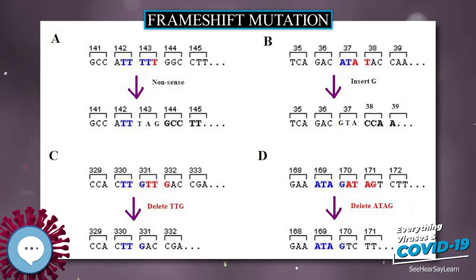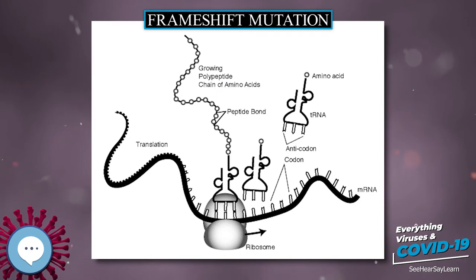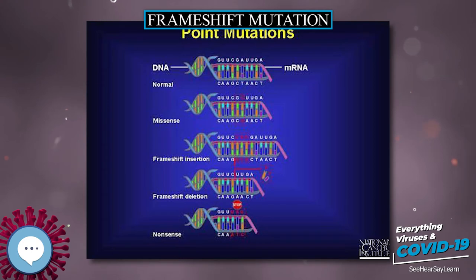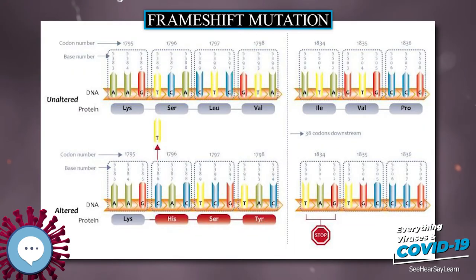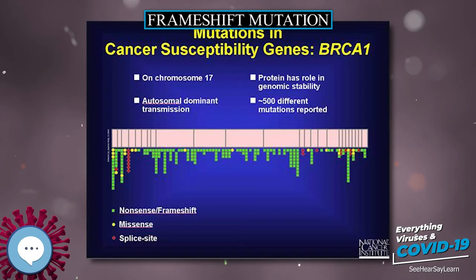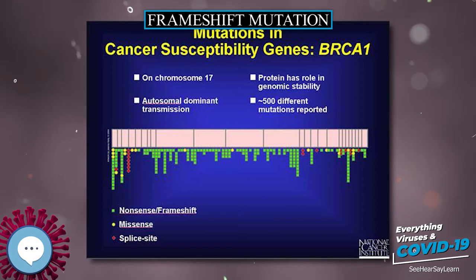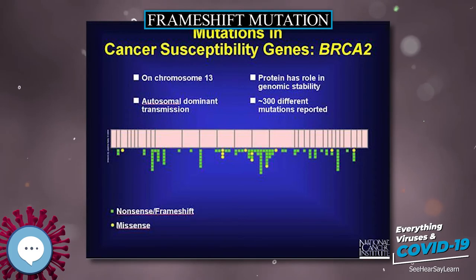The frameshift mutation will also alter the first stop codon — UAA, UGA, or UAG — encountered in the sequence. The polypeptide being created could be abnormally short or abnormally long and will most likely not be functional. Frameshift mutations are apparent in severe genetic diseases such as Tay-Sachs disease; they increase susceptibility to certain cancers and classes of familial hypercholesterolemia.